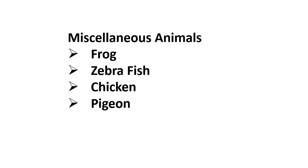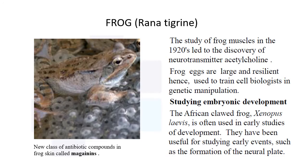Apart from mammals, several other animals are used in research, such as frog, zebrafish, chicken, and pigeon. Frog — the scientific name is Rana tigrina. The study of frog muscles in the 1920s led to the discovery of the neurotransmitter acetylcholine. Frog eggs are large and resilient, hence used to train cell biologists in genetic manipulation and studying embryonic development. The African clawed frog is often used in early developmental studies, particularly the formation of the neural plate.